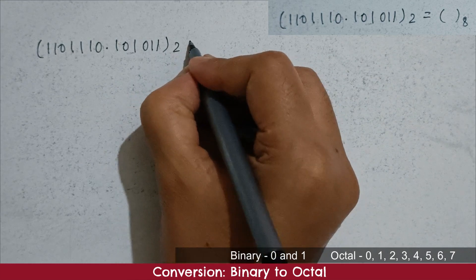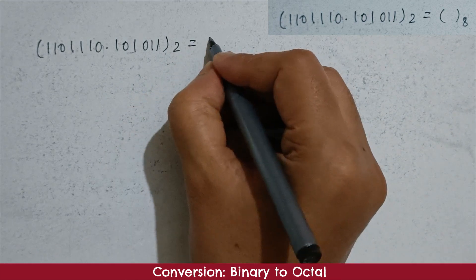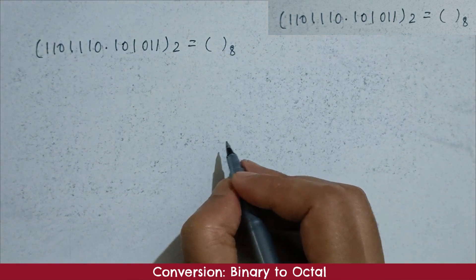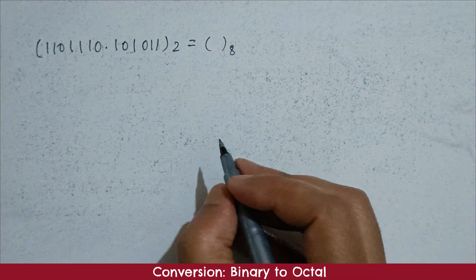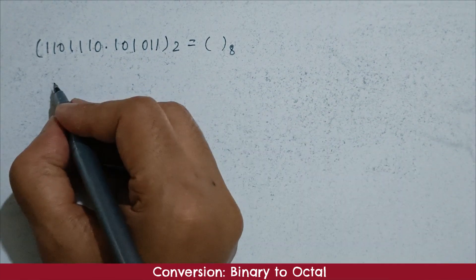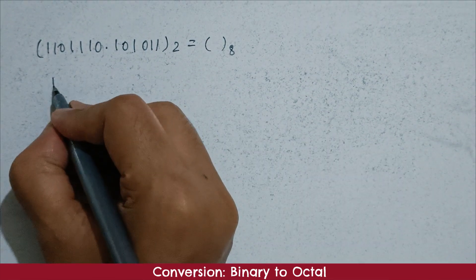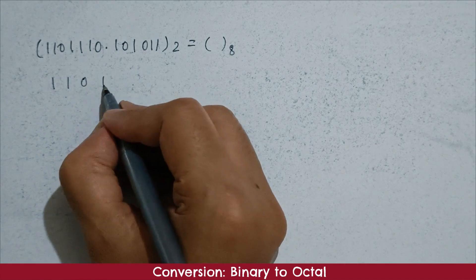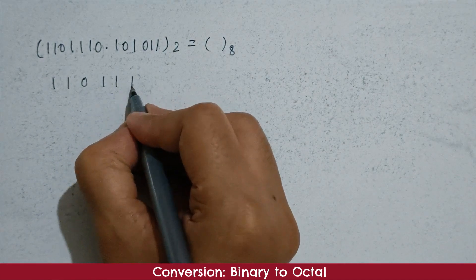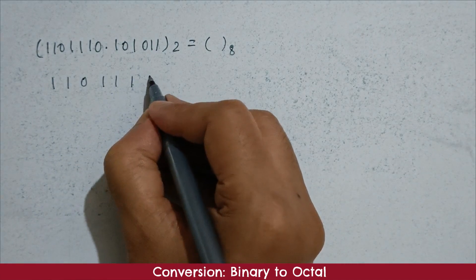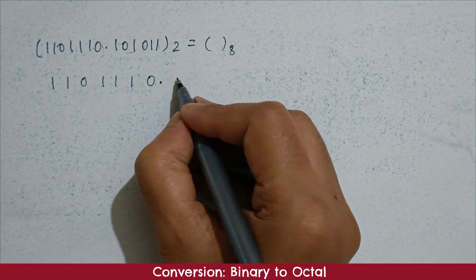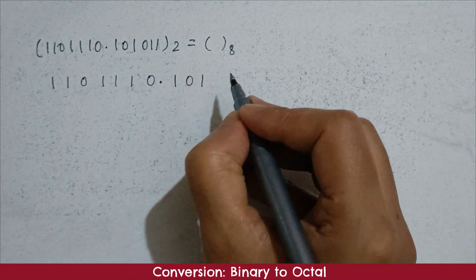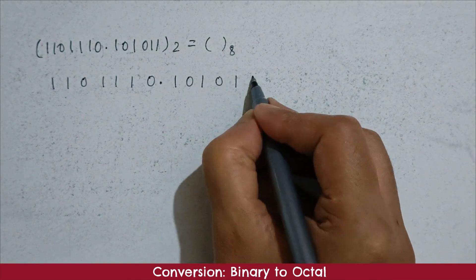So here you can see the question — I will convert the binary number to octal. Kindly write down the number: 1, 1, 0, 1, 1, 1, 0 point 1, 0, 1, 0, 1, 1.